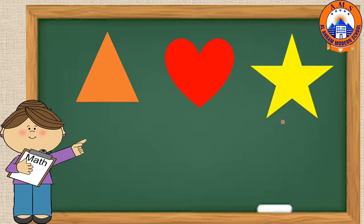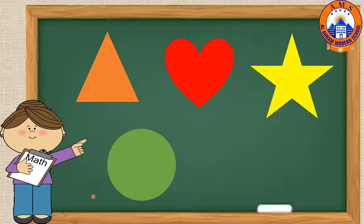What shape is it? Star. What is the color of this star? Yellow. What is this shape? Circle. What is the color of this circle? Green.